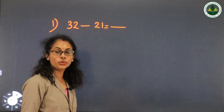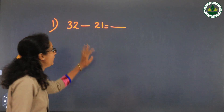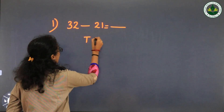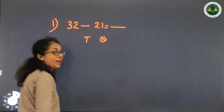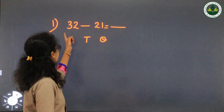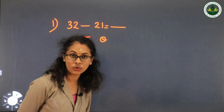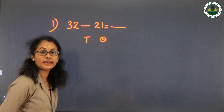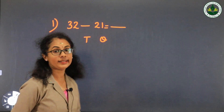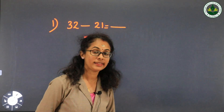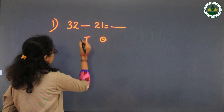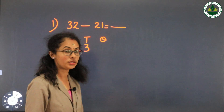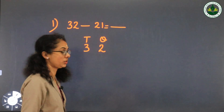32 minus 21 equals dash. First you write T and O — tens and ones. In 32, there are 3 tens and 2 ones. Write 3 in the tens column and 2 in the ones column.